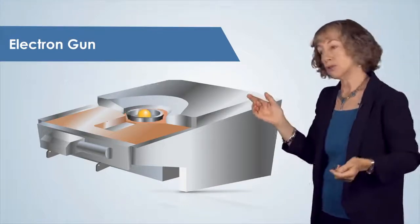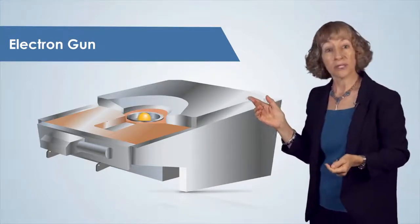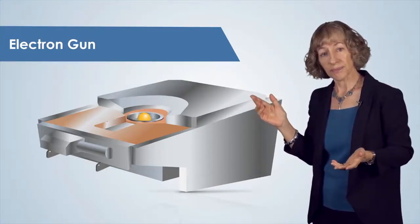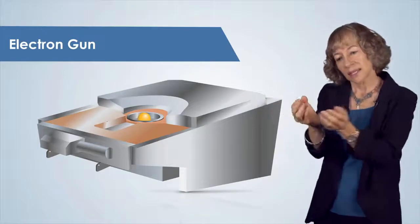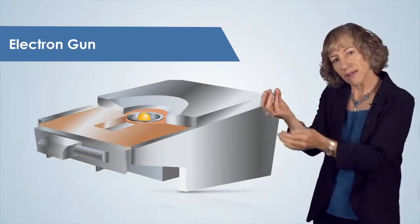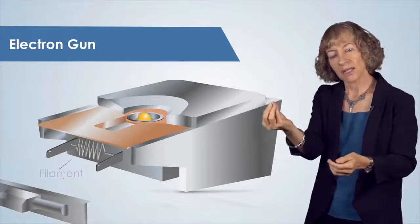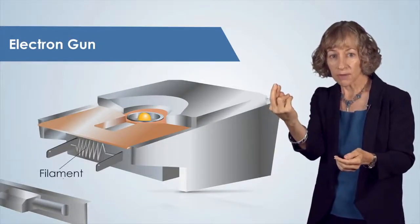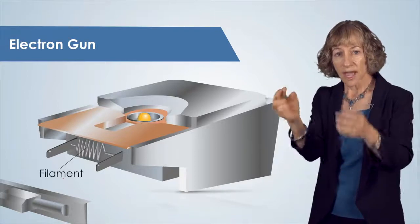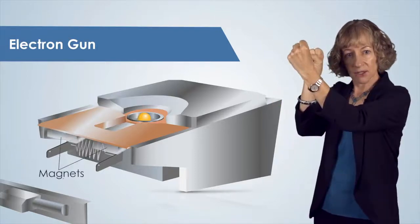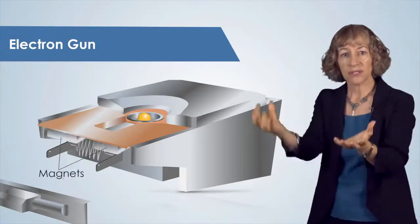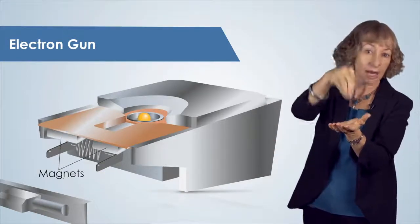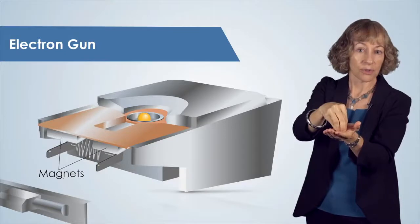Here is a crucible with gold in it for the source material. Contained within that electron gun is a filament, the source of the electrons, and magnets for focusing that electron beam and directing it toward the crucible.